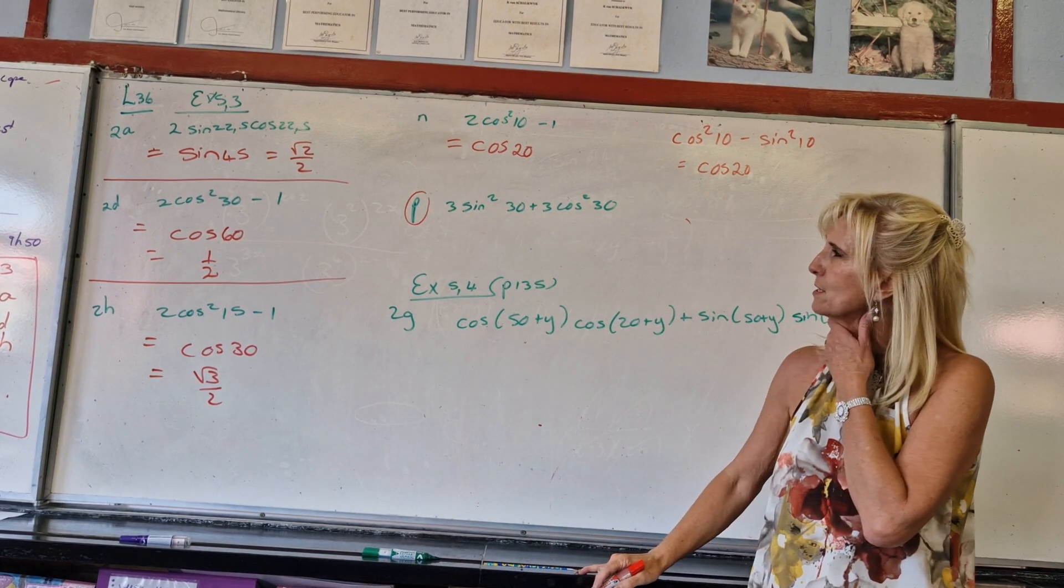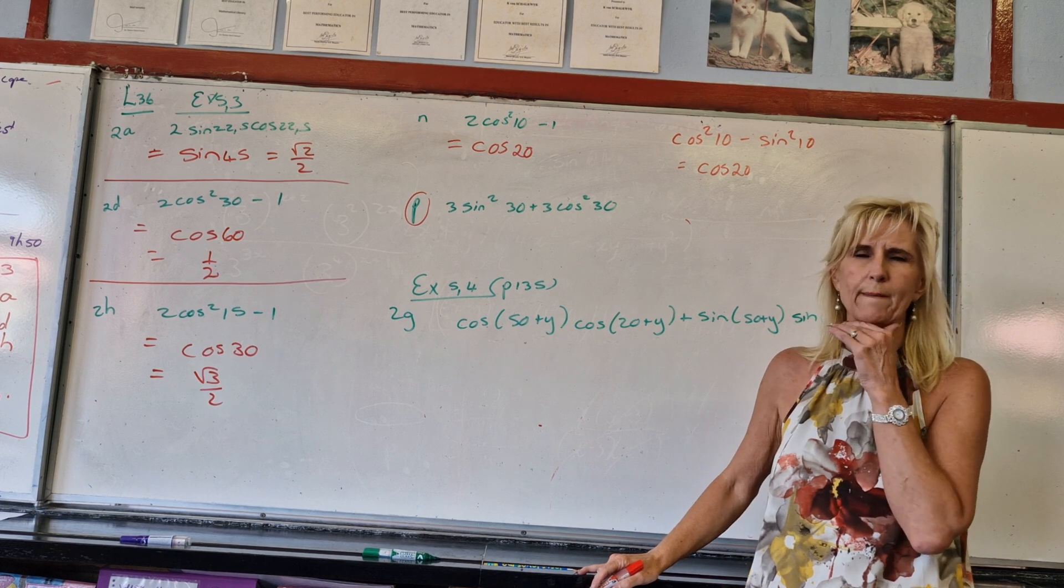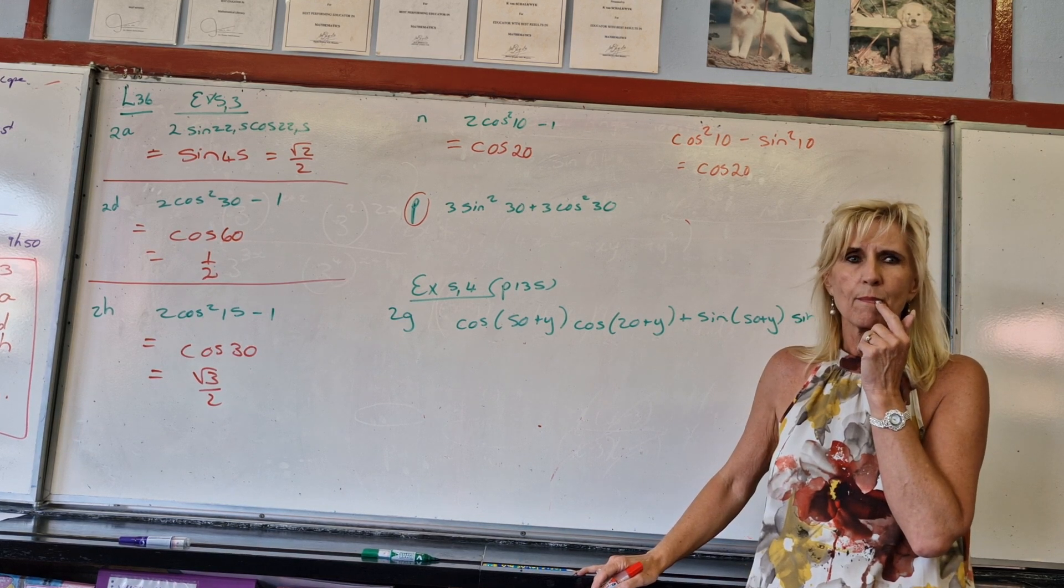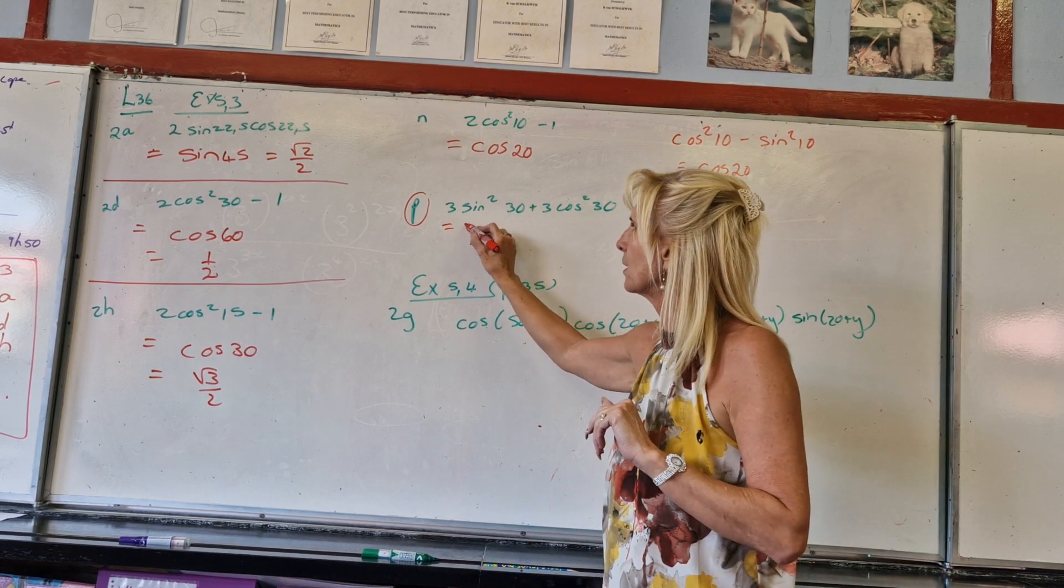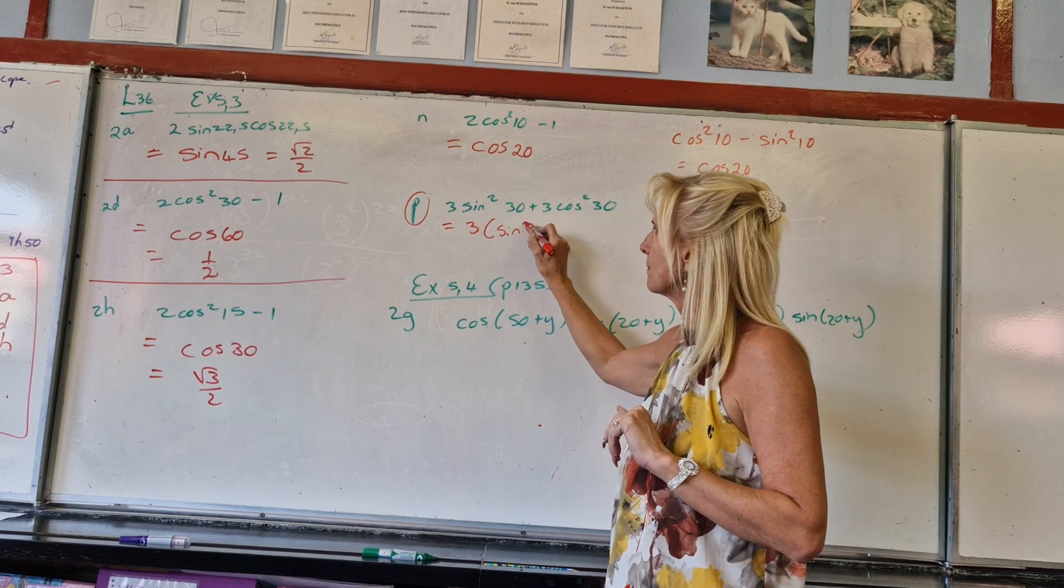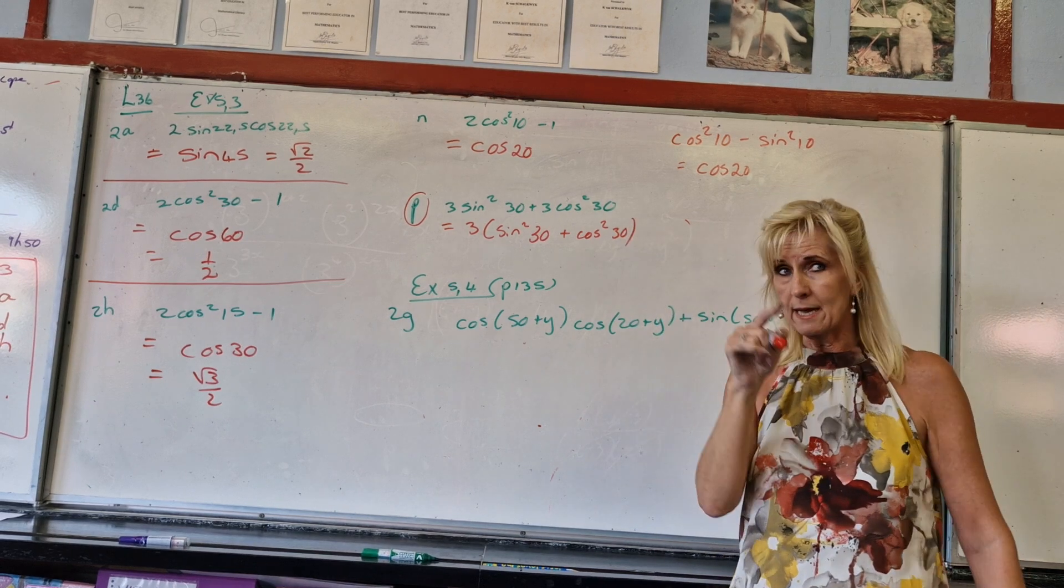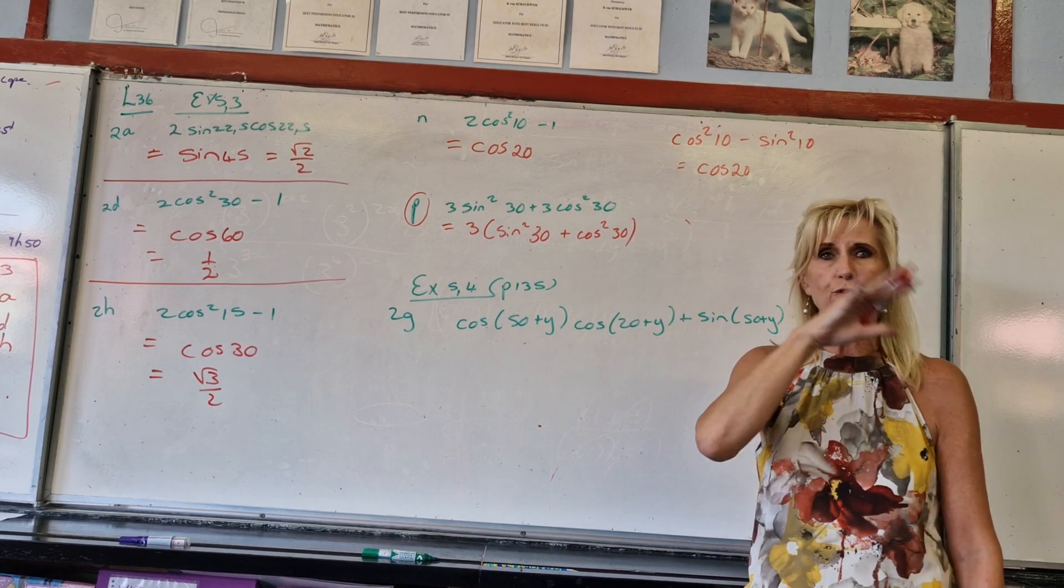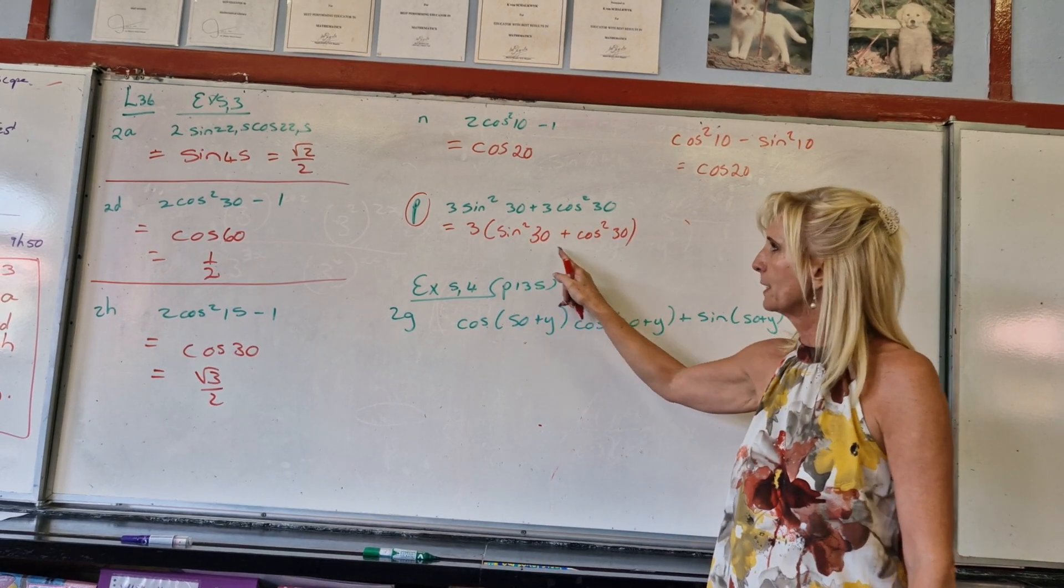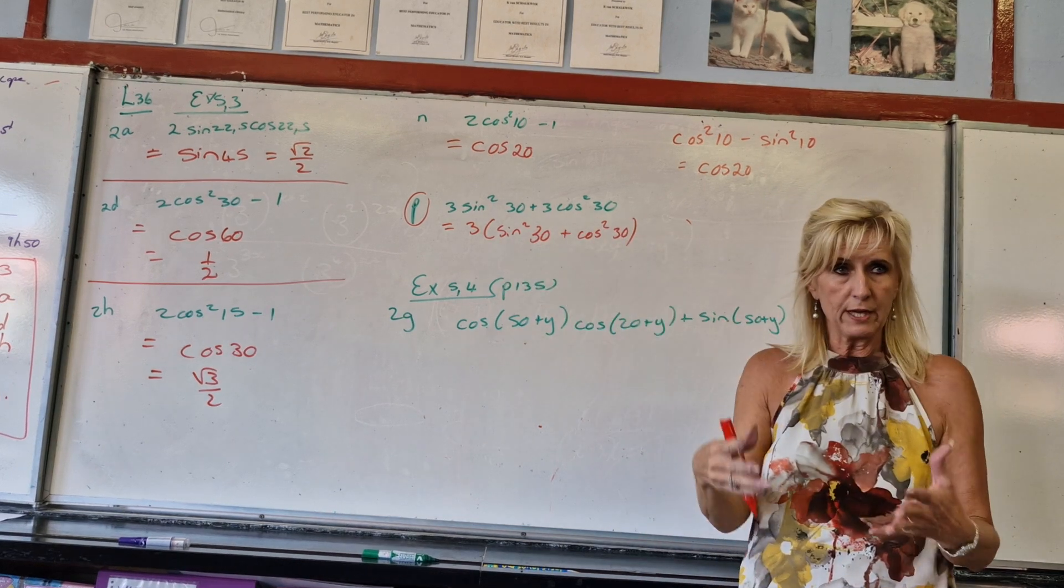3sin² + 3cos². Why would you do that? Take out a 3. What's happening there? It's another identity that you've been used to forever. This has always been 1. Don't forget about it.